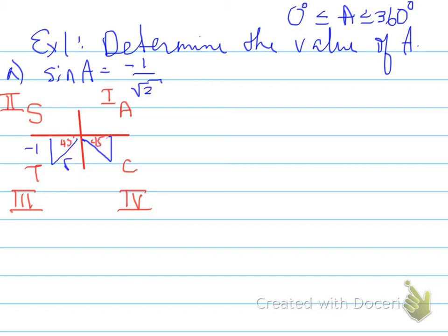Why are we writing 45°? Remember that -1/√2 is a special ratio. This means the reference angle must be 45°, where the opposite side is -1 and the hypotenuse is √2. The same applies on the other side.